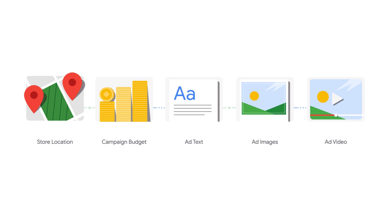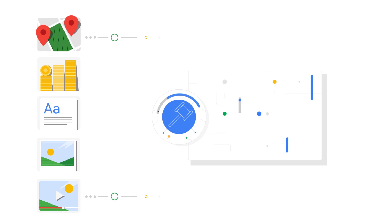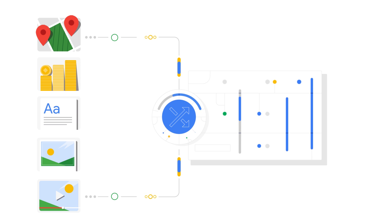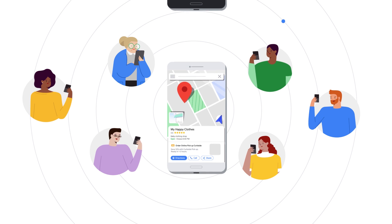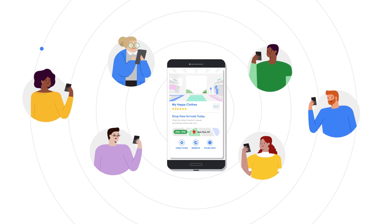How do local campaigns work? You provide your store locations, a campaign budget, ad text, images, and video. Then, Google's massive computing power automatically optimizes bids, ad placements, and ad combinations so that you can promote your business at scale across Google Properties and maximize visits to your physical locations.